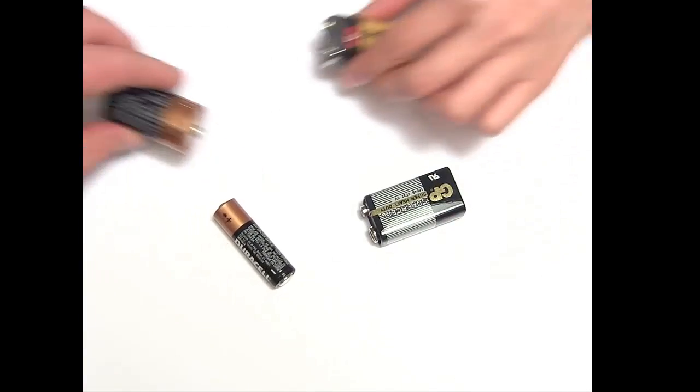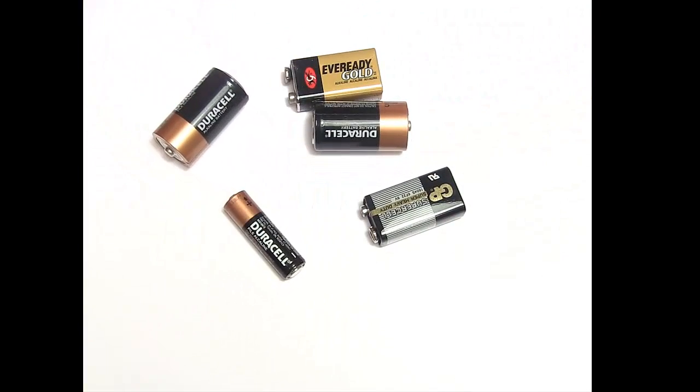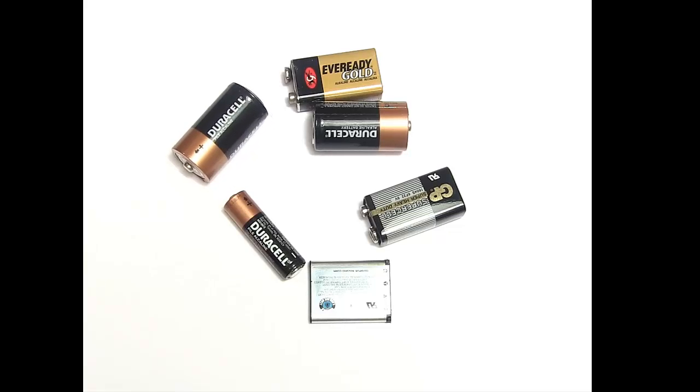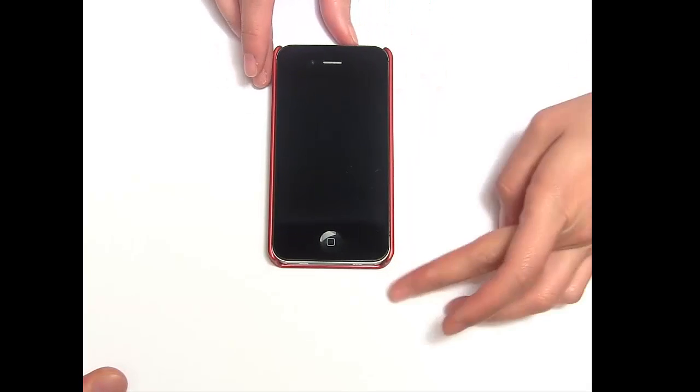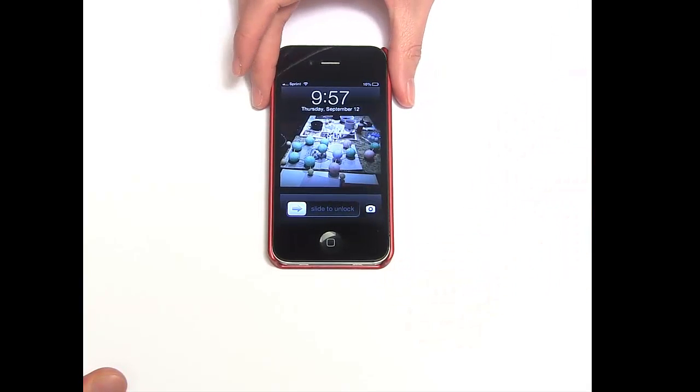Well, there are lots of different types of batteries. And each type contains different chemicals just waiting to react. But in principle, the chemical reaction in all of these batteries is the same. So, because we feel like it, we are going to explain how cell phone batteries work.